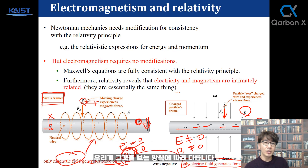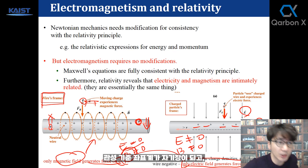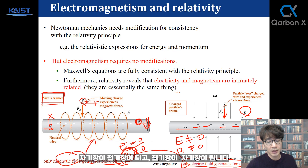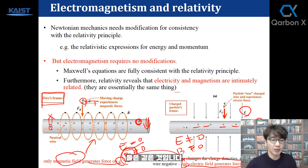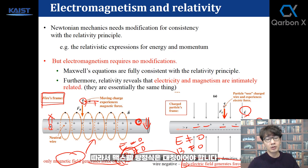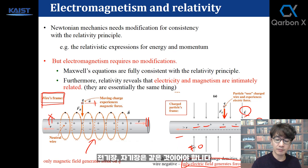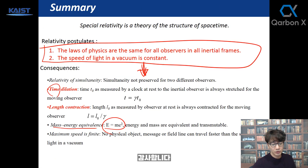In different inertial reference frames, what appears as a magnetic field in one frame becomes an electric field in another, and vice versa. They are the same thing. So Maxwell's equations should be symmetric — this is a beautiful theory. Electric field and magnetic field are the same thing. Alright, thank you.